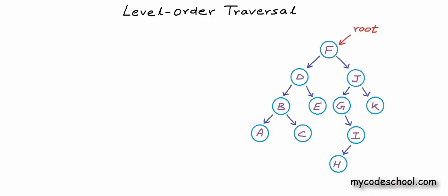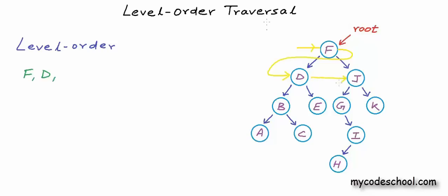For this binary tree that I am showing here, if I have to traverse the tree and print the data in nodes in level order, we will start at level 0 and print F. Now we are done with level 0, so we can go to level 1 and visit the nodes at level 1 from left to right. From F we will go to D and from D we will go to J. Now level 1 is done, so we can go to level 2.